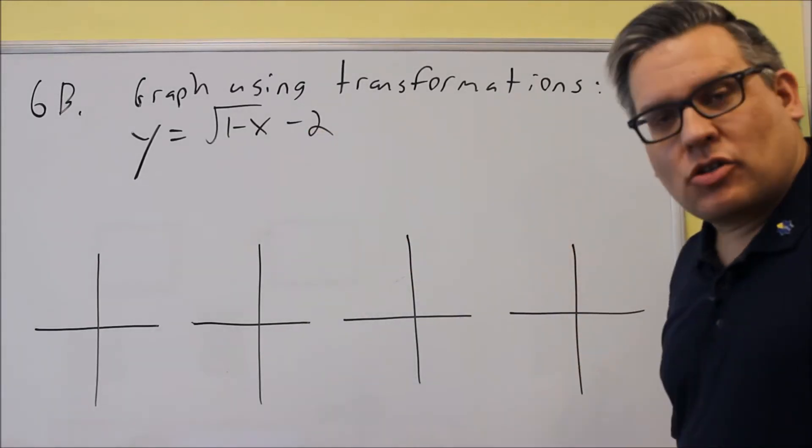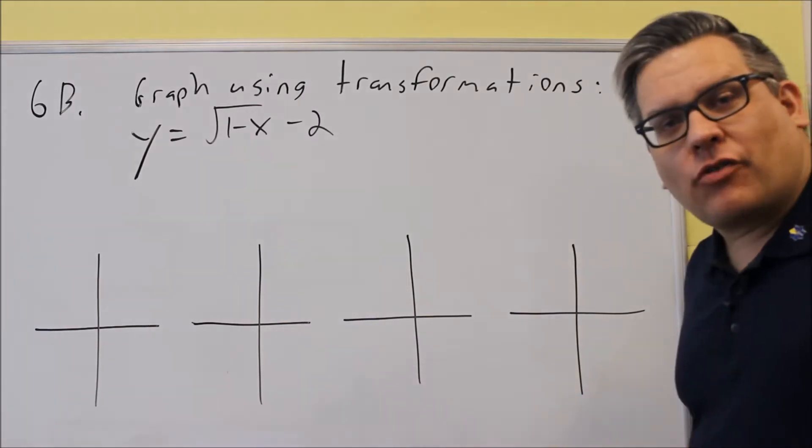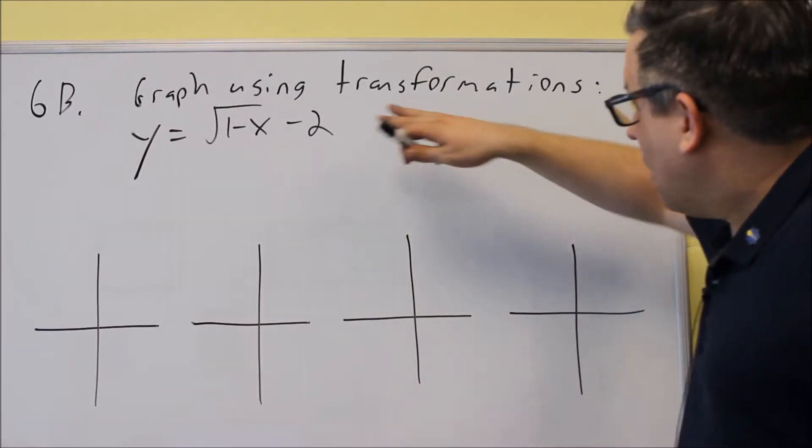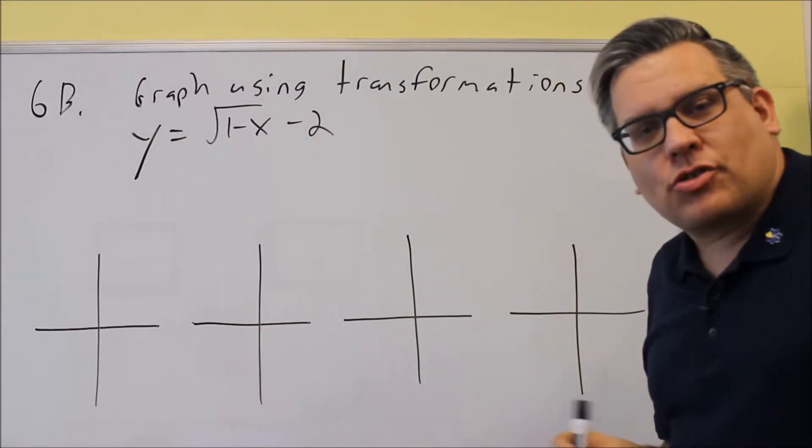For 6b, now we have a square root one. So again, we have to make sure we start with the same base graph here. Now for this one, I have a little bit different order of how it's shown here.